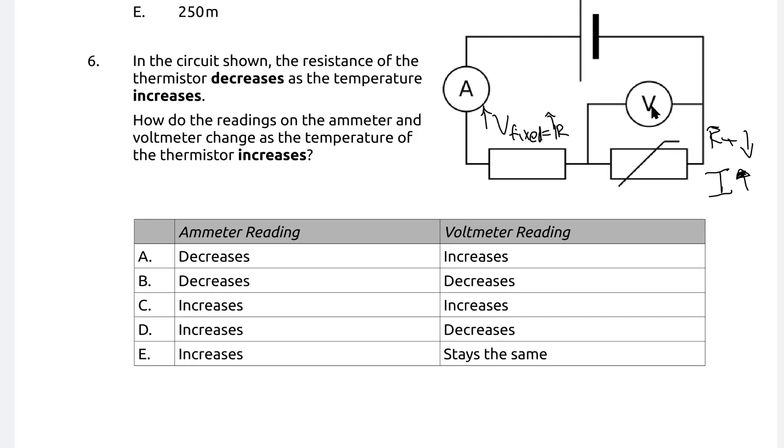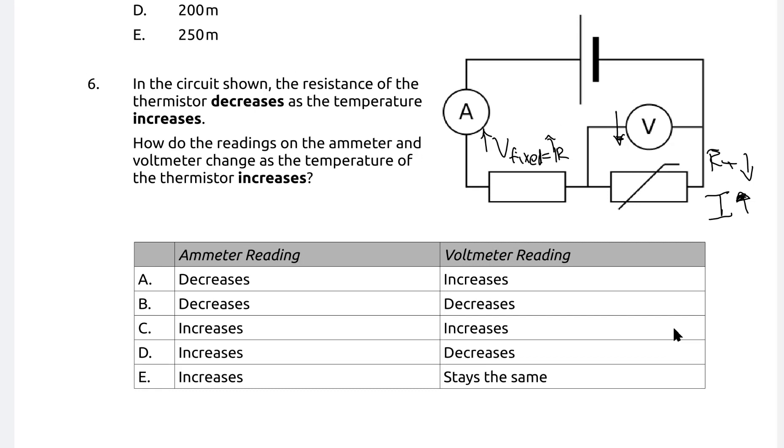If this voltage increases, then this one here has no other option but to decrease. Why is that? Because they have to add up to the EMF of the cell. Imagine that this one here was 6 volts. This one here was 3 volts, this one here was 3 volts. If this one here suddenly goes up to 4 volts, this one here has to go down to 2 volts. Because they need to add up to 6. It's the same principle. Therefore, the voltage across the thermistor will have to go down. So, the voltmeter reading decreases, the current increases. Correct answer has got to be D.